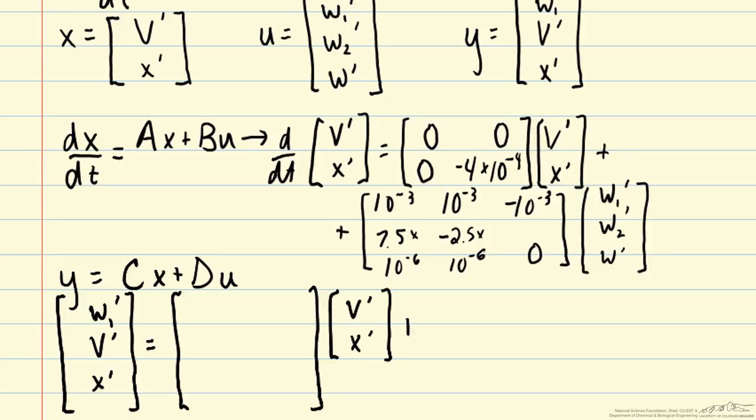We do need to be very careful to get our dimensions right so that we can perform our matrix multiplications. C here is going to have two columns that can multiply V prime and X prime and three rows for the three measurements. So if we start with W1 prime that doesn't depend on V prime or X prime but it is equal to our first input, W1 prime.